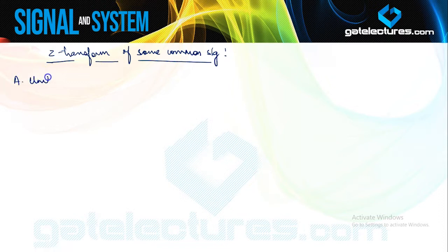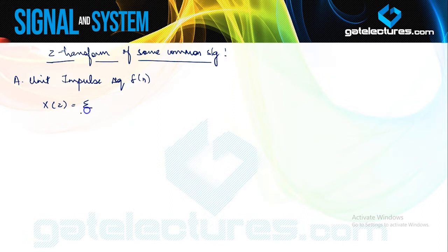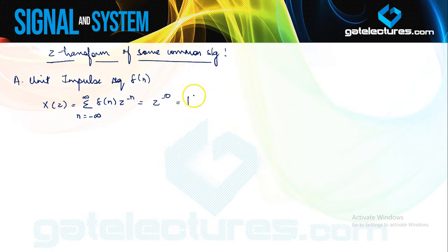The first signal we are going to look at is the unit impulse sequence, which occurs at n equal to 0 only. From the definition, X(z) is going to be the summation from n equals minus infinity to infinity of δ(n) times z^(−n). Since δ(n) occurs only at n=0, the sample at n=0 gives z^0 = 1. So the Z-transform of δ(n) is 1, with ROC being the entire z-plane.